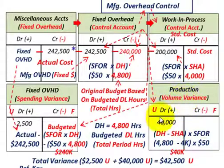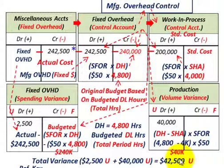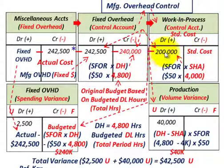Our total variance: the $2,500 unfavorable spending variance plus the $40,000 unfavorable production volume variance equals $42,500 unfavorable total. Everything was unfavorable in this problem. Looking at the T-accounts, the actual cost of $242,500 compared to the standard cost of $200,000 in work-in-process shows a difference of $42,500, confirming our result.